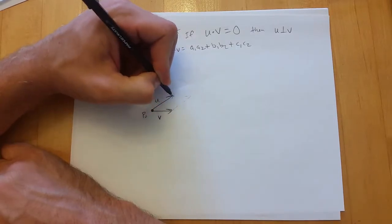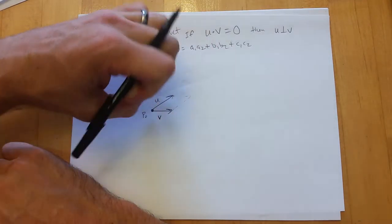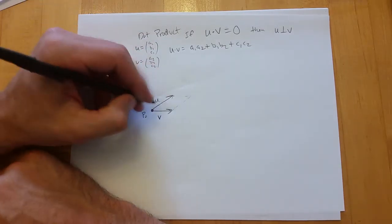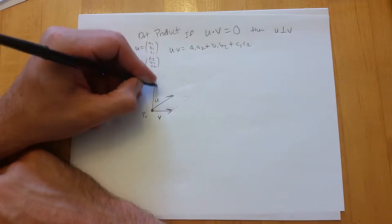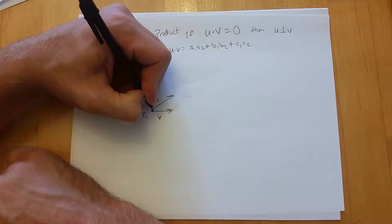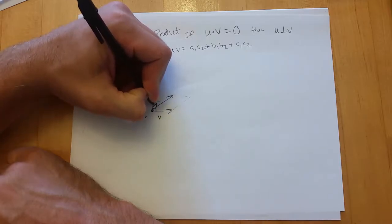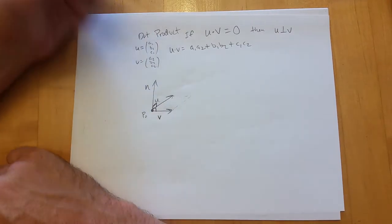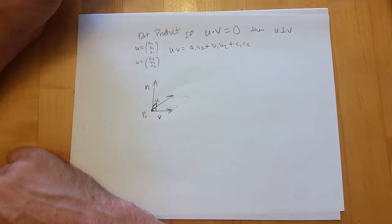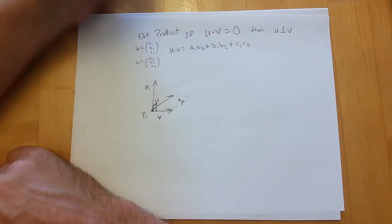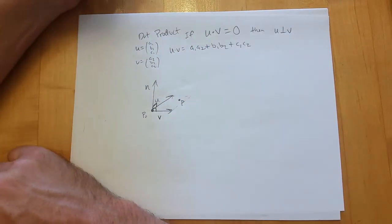If the dot product adds up to zero, the vectors are perpendicular. The way we describe planes, we're going to get a normal vector — I'll use the letter n — and this normal is going to be perpendicular to both of the two vectors we use to move around the plane.